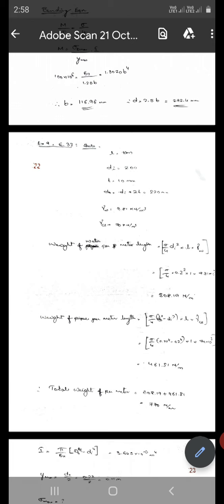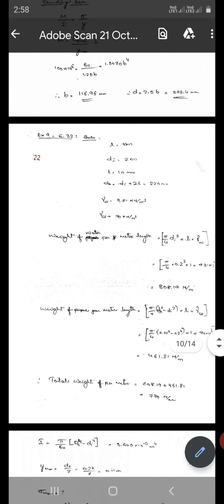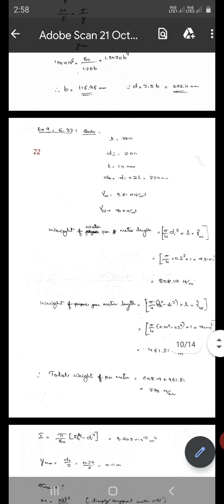Weight of pipe per meter length... Total weight per meter length is 770 newtons per meter, that is 0.77 kilonewtons per meter. Total weight per meter length is 770 newtons per meter.